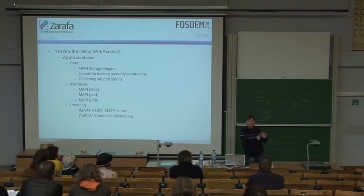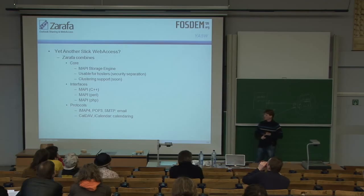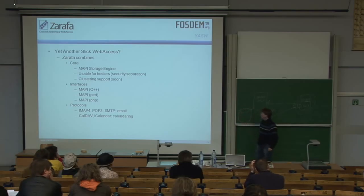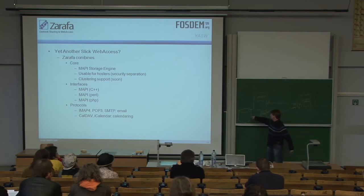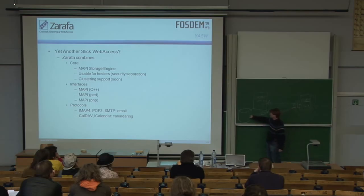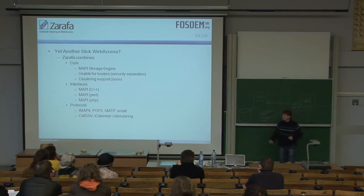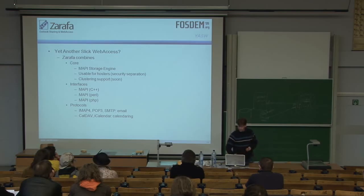We made a language wrapper for PHP so that from PHP you can basically access the API, and we made a language wrapper for Perl. Because we have all the data in our own database, when I want to retrieve email back to a POP3 or IMAP4 client, I have to take it out of the database through the server and back to the client. We have to reconstruct the email because we write it into the database as a MAPI object, and the IMAP client wants the RFC 822 message again. That's why the IMAP4 and POP3 gateway actually does conversion.